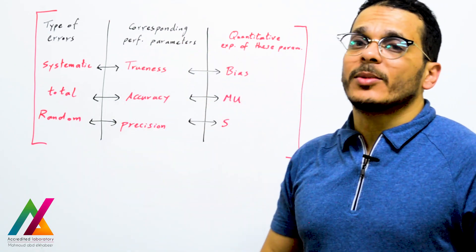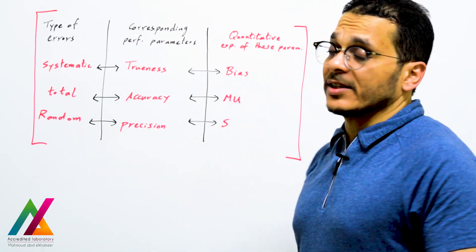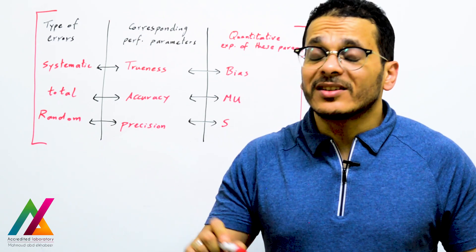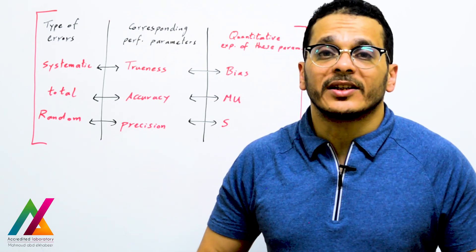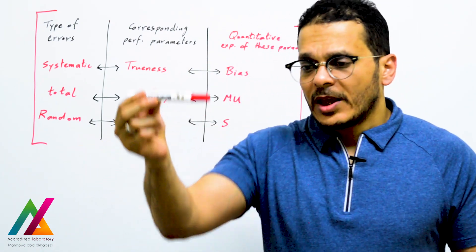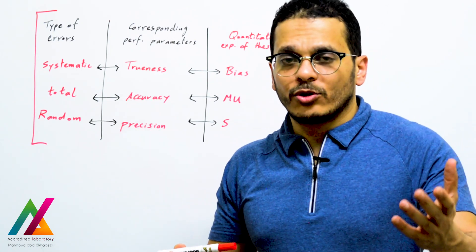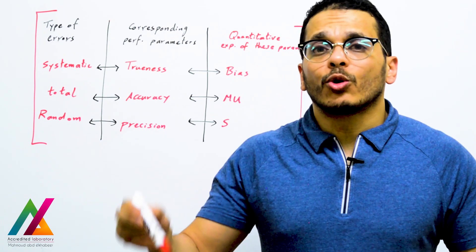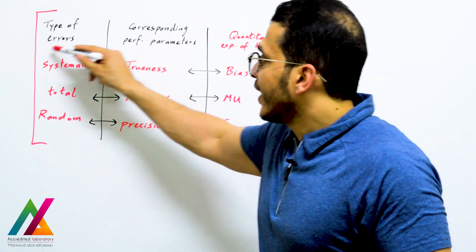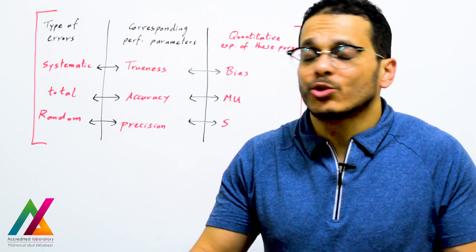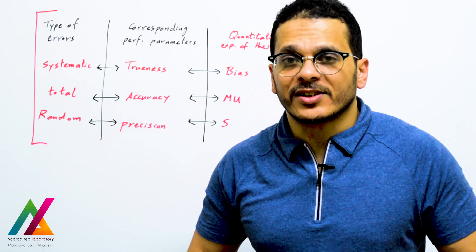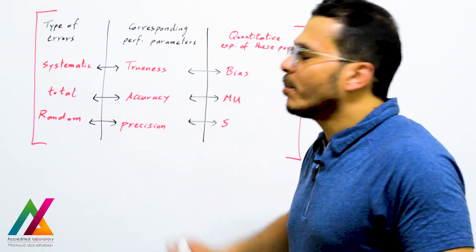Trueness is the estimate of systematic errors and can be expressed as bias. To evaluate trueness, you calculate the bias. Trueness is best evaluated using a certified reference material (CRM) with a known true value. If you perform replicate analyses of a CRM and get results close to the reference value, the average will also be close to the true value, the bias will be low, and you can confirm that systematic errors are low and did not significantly affect your results.